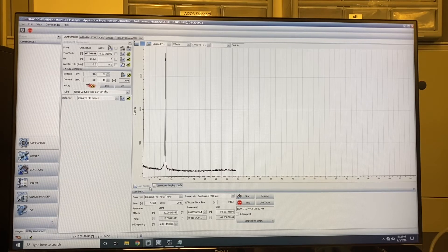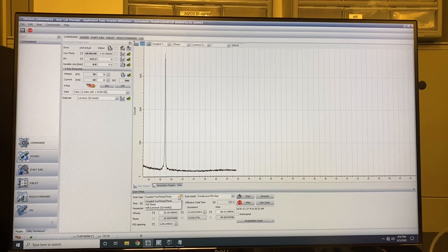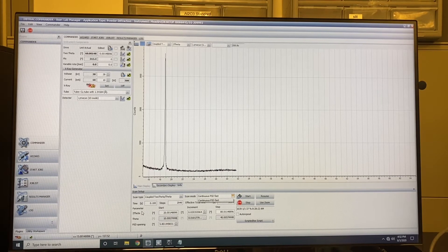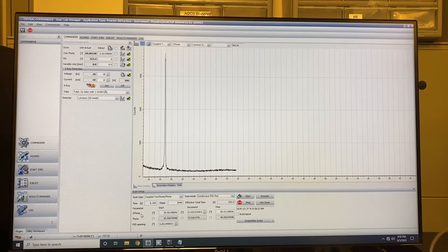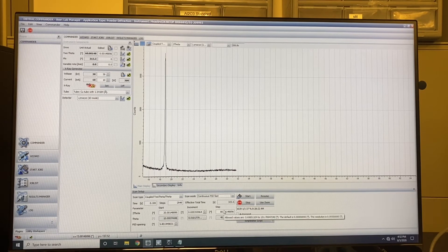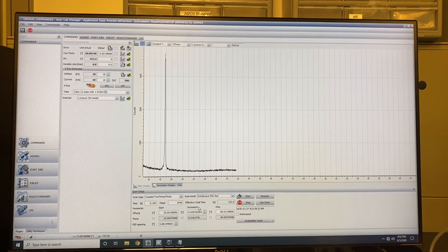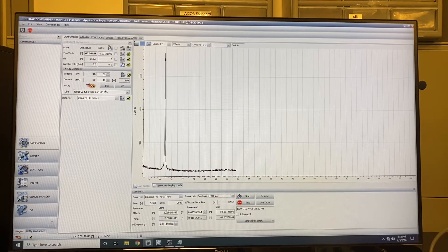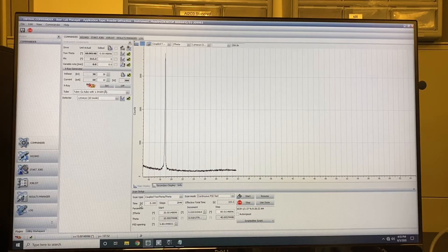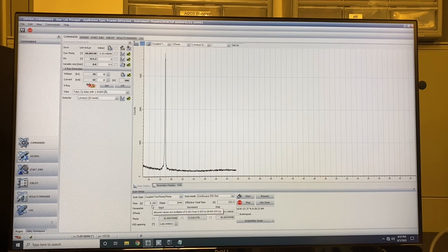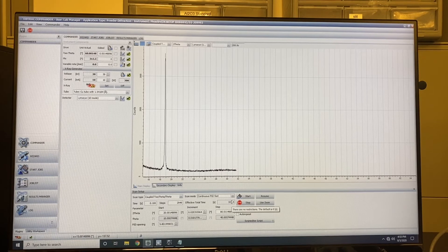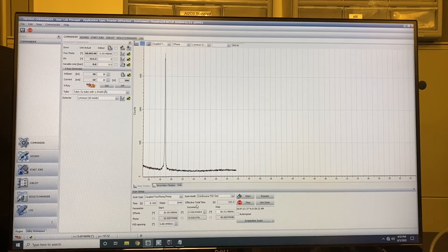Then we go to the scan setup. Here we can see the scan type is coupled theta 2θ. We only use this one. And scan model is continuous PSD fast. And the parameter you can set is 2θ, the start angle and the stop angle. For this angle, I will start from 20 and stop at 80 degree. For the increment per step, you can set 0.02 or 0.01. After you set the start angle and the stop angle, you can get the steps here. And then you can set the time per step. If I set it 0.01, you can see the total time you will use for the total measurement. If you think this assignment parameter is good.